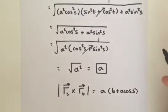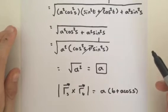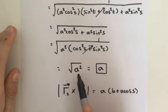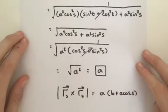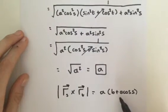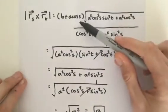In the last video, we simplified our cross product and got the square root of a squared equals a. At the end of the last video, I forgot to multiply it by b plus a cosine of s, because that's what we factored out in the first place, as we have here.